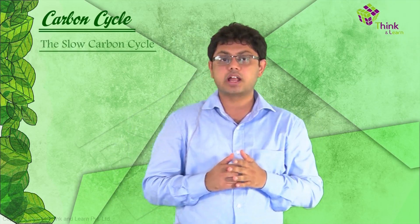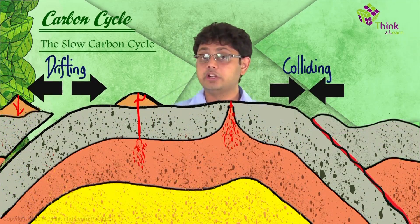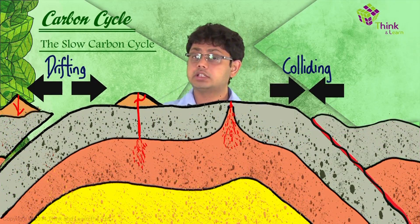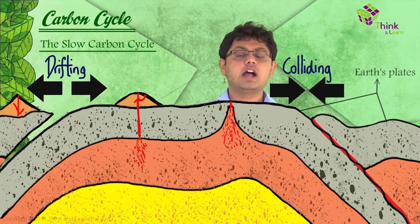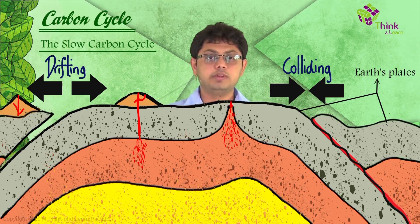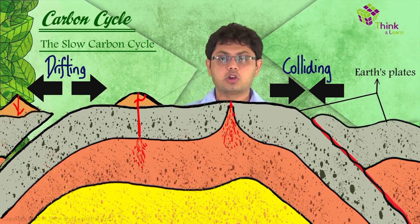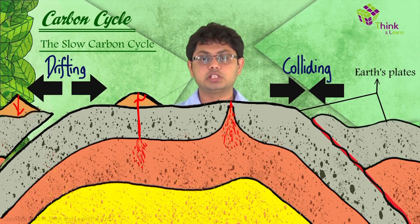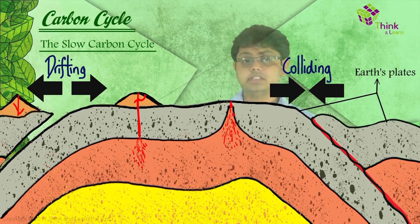Getting into the slow carbon cycle: through a series of chemical reactions and tectonic activities — that is, the earth's plates moving — carbon takes between 100 to 200 million years to move between rock, soil, ocean, and atmosphere in the slow carbon cycle.